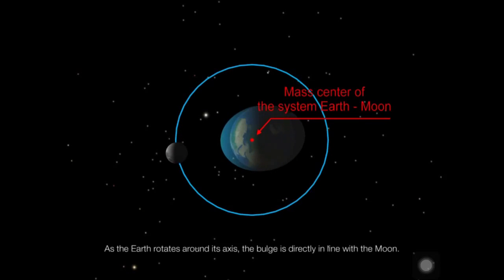As the Earth rotates around its axis, the bulge is directly in line with the Moon.